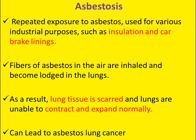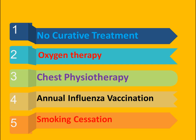Let's look at asbestosis in detail. Repeated exposure to asbestos, which is used for industrial purposes such as insulation and car brake linings, causes asbestos fibers in the air to be inhaled and become lodged in the lungs. As a result, lung tissue is scarred and the lungs are unable to contract and expand normally, which can lead to asbestosis and even asbestos-related lung cancer. There is no cure; treatment is supplementary — oxygen therapy with high or low flow delivery, chest physiotherapy, annual influenza vaccination, and smoking cessation through patient education, counseling, nicotine patches, or lozenges.